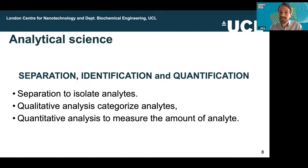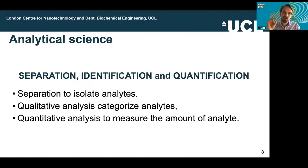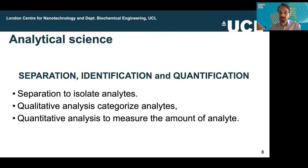Analytical science is an essential component of biochemical engineering — you can't manufacture things if you have no ability to measure things. More generally, analytical science involves separation, identification, and quantification. For example, if we have a viral protein in blood — which has a lot of stuff in it — we might want to separate red blood cells out, identify that we're measuring the right thing (the viral protein), and quantify how much of it is there. These are the three parts of what we're trying to do in analytical science.